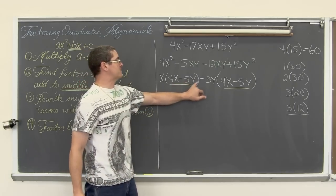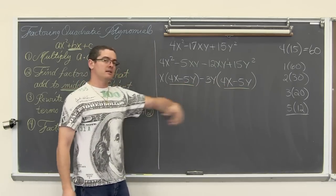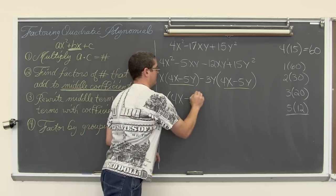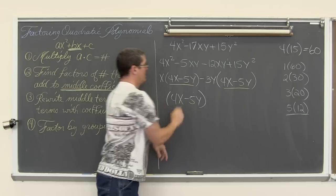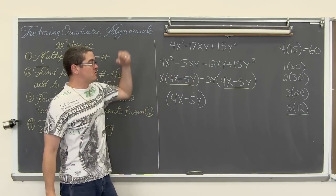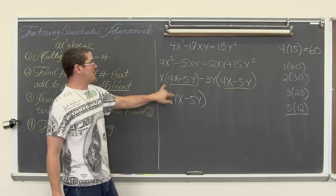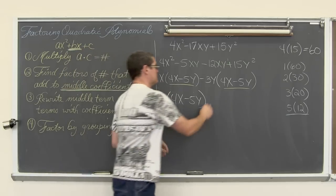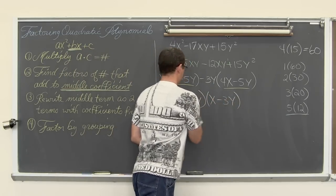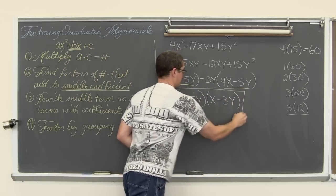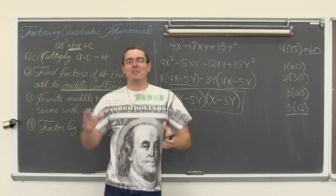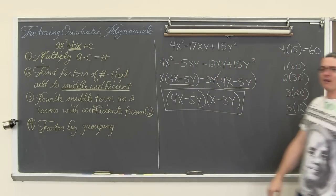Both terms share the common factor 4x minus 5y. Factoring that out, the first term leaves x and the second leaves negative 3y, giving the final answer (4x minus 5y)(x minus 3y). Now go do your homework!